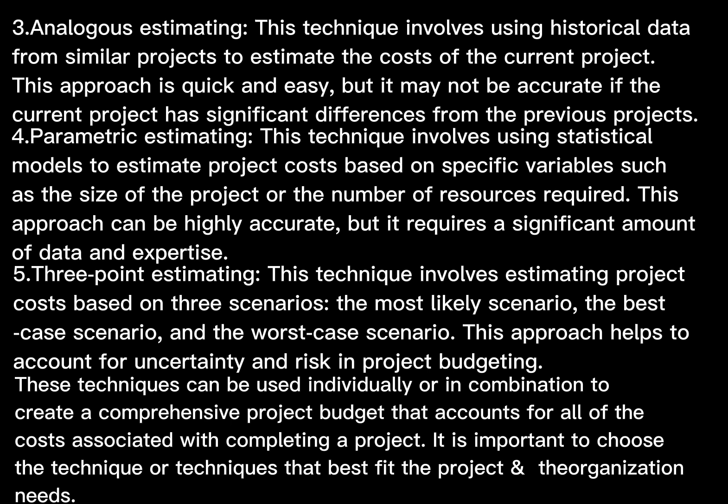4. Parametric estimating — this technique involves using statistical models to estimate project costs based on specific variables, such as the size of the project or the number of resources required. This approach can be highly accurate, but it requires a significant amount of data and expertise. 5. Three-point estimating — this technique involves estimating project costs based on three scenarios: the most likely scenario, the best case scenario, and the worst case scenario. This approach helps to account for uncertainty and risk in project budgeting.